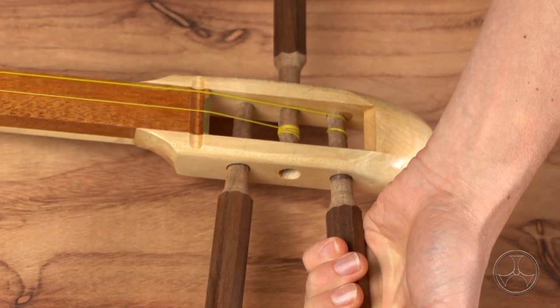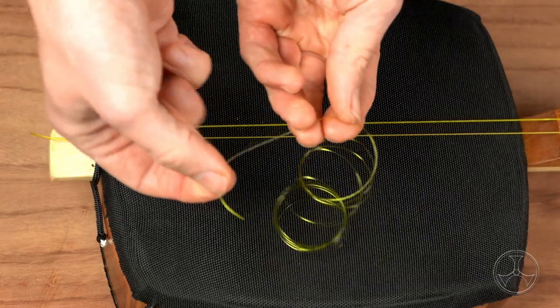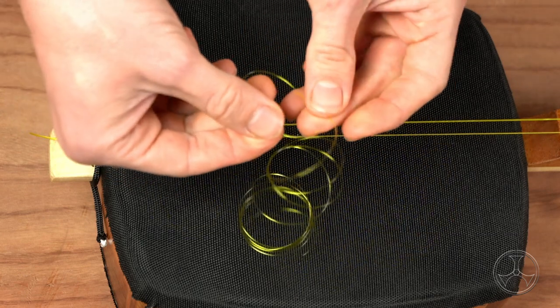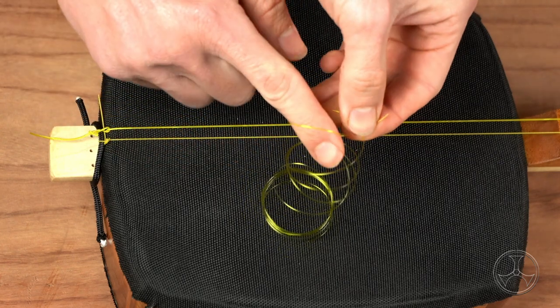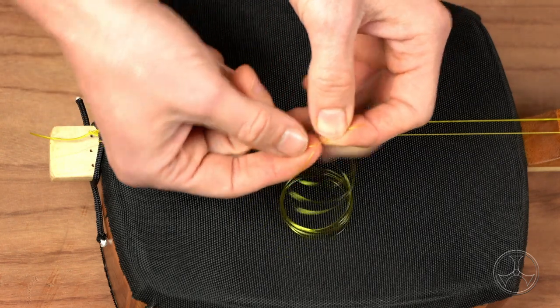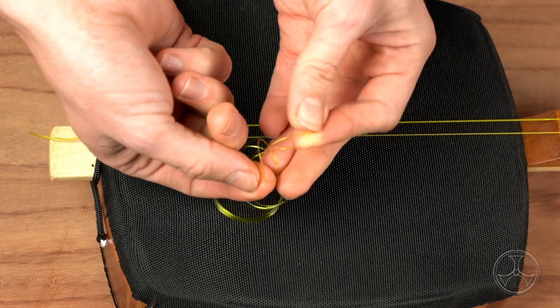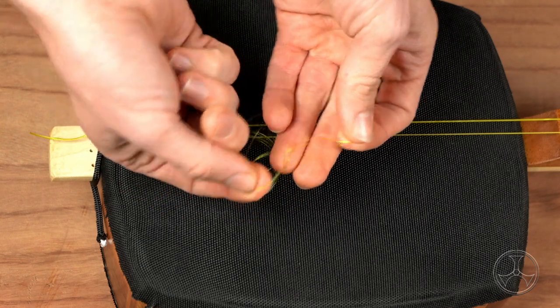Now finally, the san no ito. Short end here, long end here. Long over the short, pinch the two together. Finger goes through, grab the long end, pull it through. Pull both.